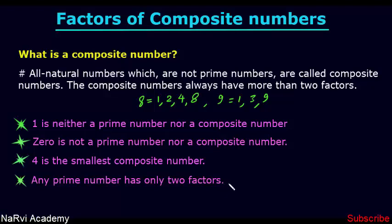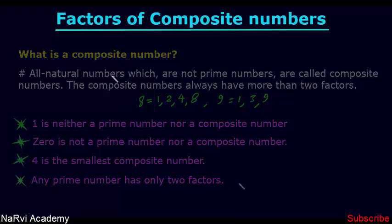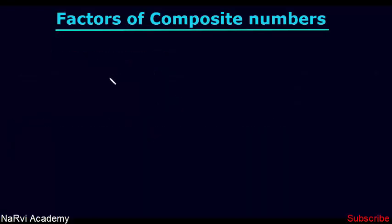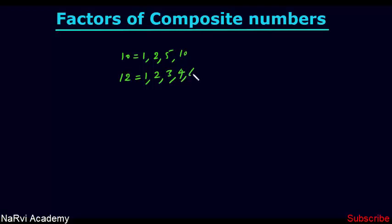Now let's get back to our main topic: how to find the number of factors of any composite number. We can find the number of factors of any smaller composite number easily. For example, number 10 has four factors: 1, 2, 5, and 10. Similarly, we can find the number of factors of 12: 1, 2, 3, 4, 6, and 12. So number 12 has six factors.